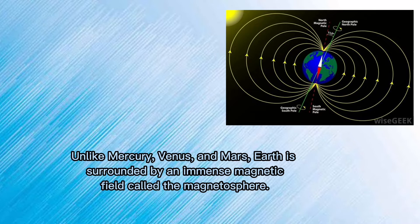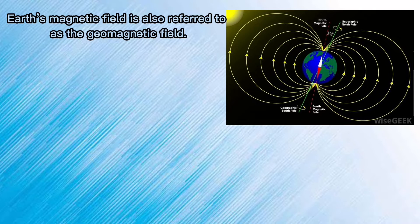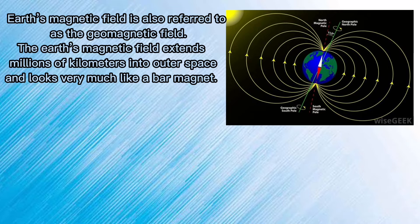Earth's magnetic field is also referred to as the geomagnetic field. The Earth's magnetic field extends millions of kilometers into outer space and looks very much like a bar magnet.